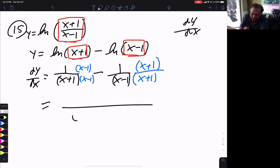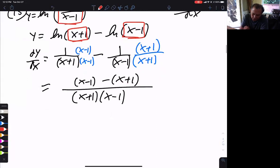And then I have a common denominator of x plus 1, x minus 1. And look at the top. I have x minus 1 minus x plus 1. Those will cancel, x minus x. And I end up with minus 2 over x plus 1, x minus 1.